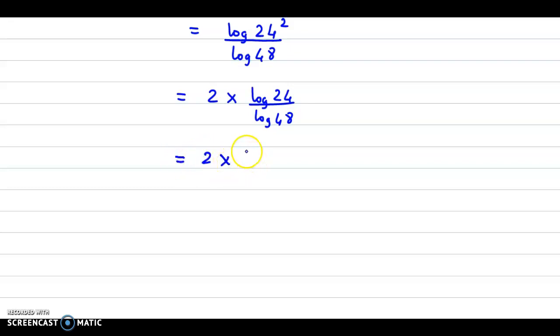So this could be written as 2 times log 24 upon log 36 into log 36 upon log 48. And we could write these two log terms in a single log form, that is log of 24 to the base 36, and this could be written as log of 36 to the base 48. Now if you observe, log 24 to the base 36 is equal to y, and log 36 to the base 48 is z.